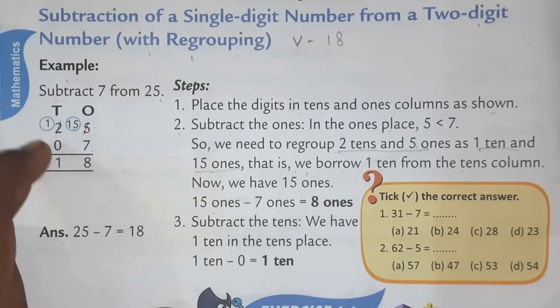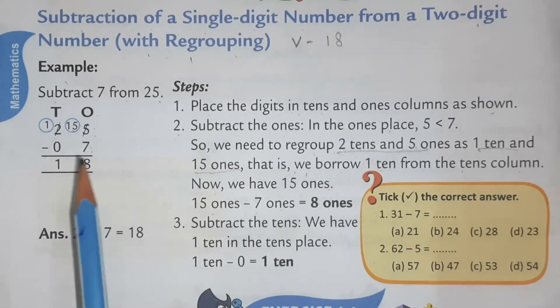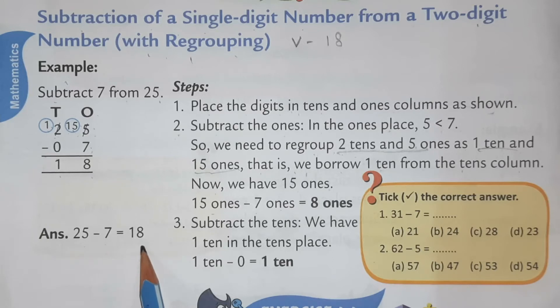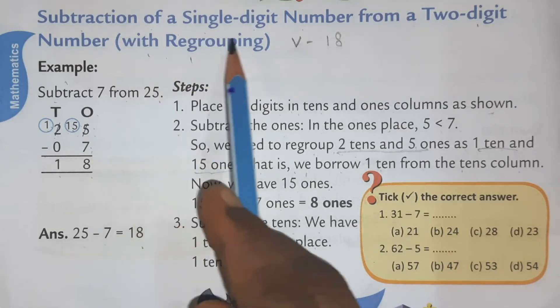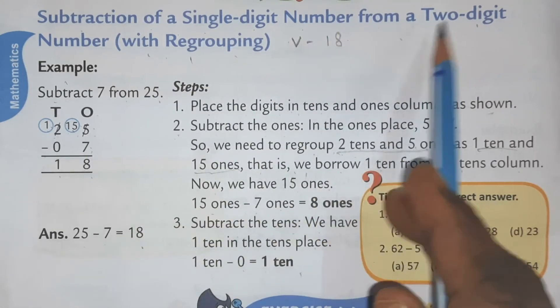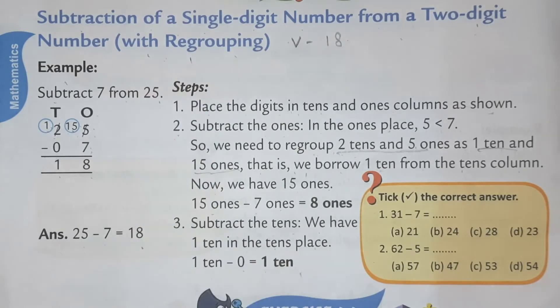It is there. Then 1 minus 0, 1. So 15 minus 7, 8, 1 minus 0, 1. So like this we have to do 25 minus 7 equal to 18. Subtract the 10s. We have 1 10 in the 10s place and 1 10 minus 0 equal to 1 10. So like this we have to solve subtraction of a single digit number from a 2 digit number with regrouping.